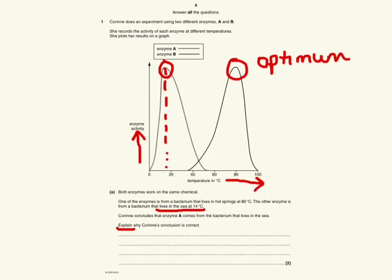There are two marks available for this question. The first mark you can gain by making the link that the sea is colder and enzyme A has more activity at a lower temperature. That's the first thing you can say.